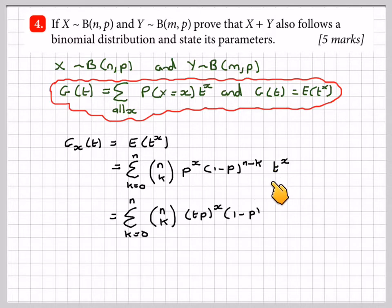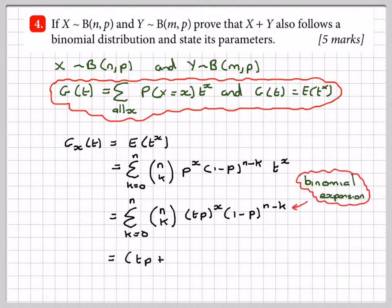We can group these terms together, so we get the sum from k equals 0 to n of n choose k, tp to the x, times 1 minus p to the n minus k. This is a binomial expansion of the form tp plus 1 minus p to the power of n.